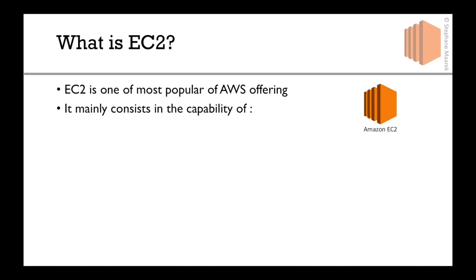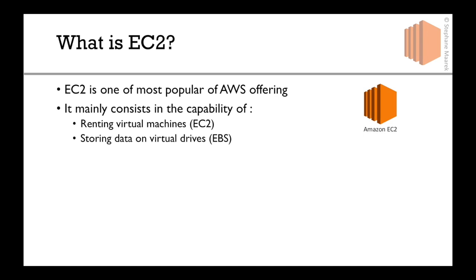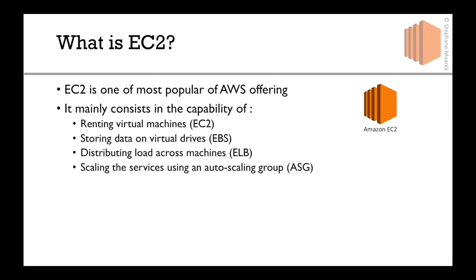EC2 is the basis of everything that happens on Amazon. It mainly consists of the capability of renting virtual machines, called EC2 machines. You can also store data on virtual drives, called EBS. You can distribute load across machines using an Elastic Load Balancer, or ELB, and you can scale services using an Auto Scaling Group, called ASG.